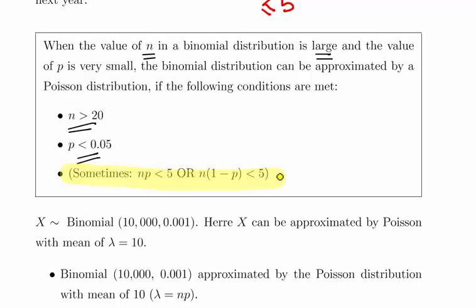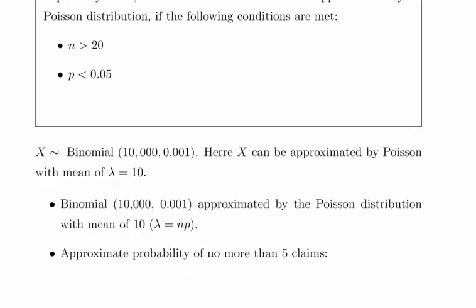Sometimes we use more strenuous conditions as well - np has to be less than or equal to five. We actually don't meet that, we're at 10, so essentially I'm going to ignore that one.